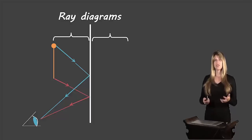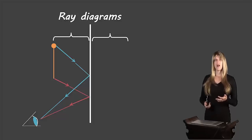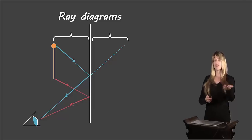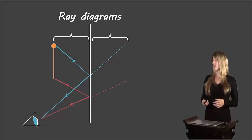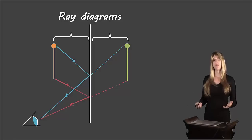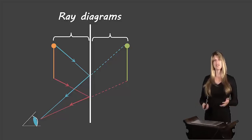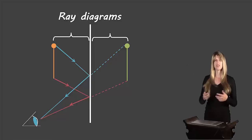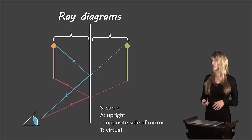Our brain can't perceive that light bends; it assumes light always moves in a straight line. So our mind thinks the light came from straight back on the other side of the mirror, even though light cannot travel through an opaque mirror. Our brain interprets the image as being on the other side — that's a virtual image. The green image is the same size and same orientation as the original, and you can see from those white brackets that it's the same distance from the mirror. So: same size, upright, opposite side of mirror, and virtual.